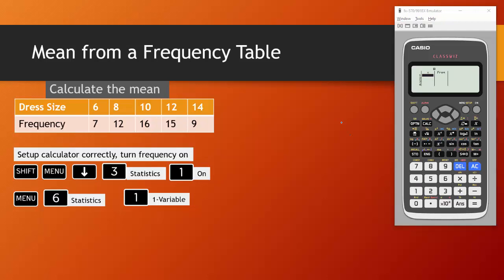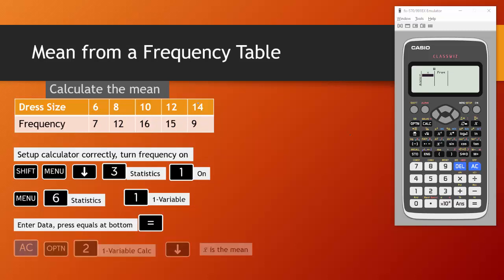But what you'll notice this time is you now have two columns. One column called X which you had previously and one for frequency which is where these frequency values will go. For X we are going to put in these dress sizes: 6, 8, 10, 12, 14.